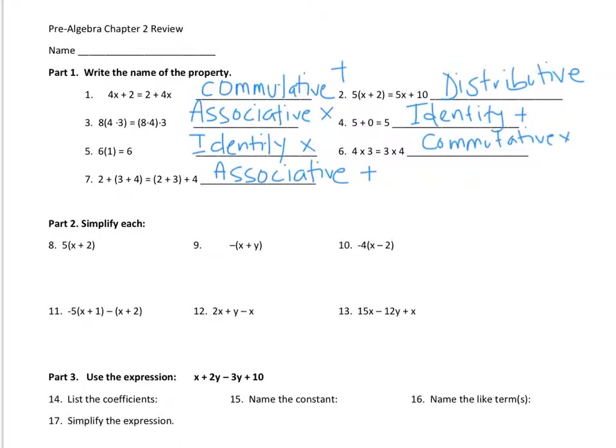The first part of your test is just like the review — you're going to have to know the different properties. We have basically four different properties. We have the commutative property, which switches the order around.